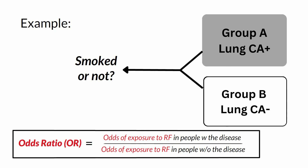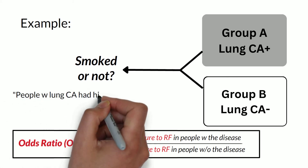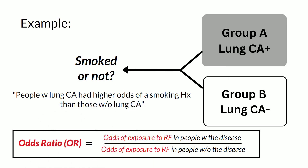So odds ratio is the odds of exposure to risk factor in people with the disease divided by the odds of exposure to risk factor in people without the disease. For instance, when you go back in time, you will find that the people with lung cancer smoked — they were exposed to the risk factor — while the people without lung cancer did not smoke. So we can conclude that people with lung cancer had higher odds of a smoking history than those without lung cancer.